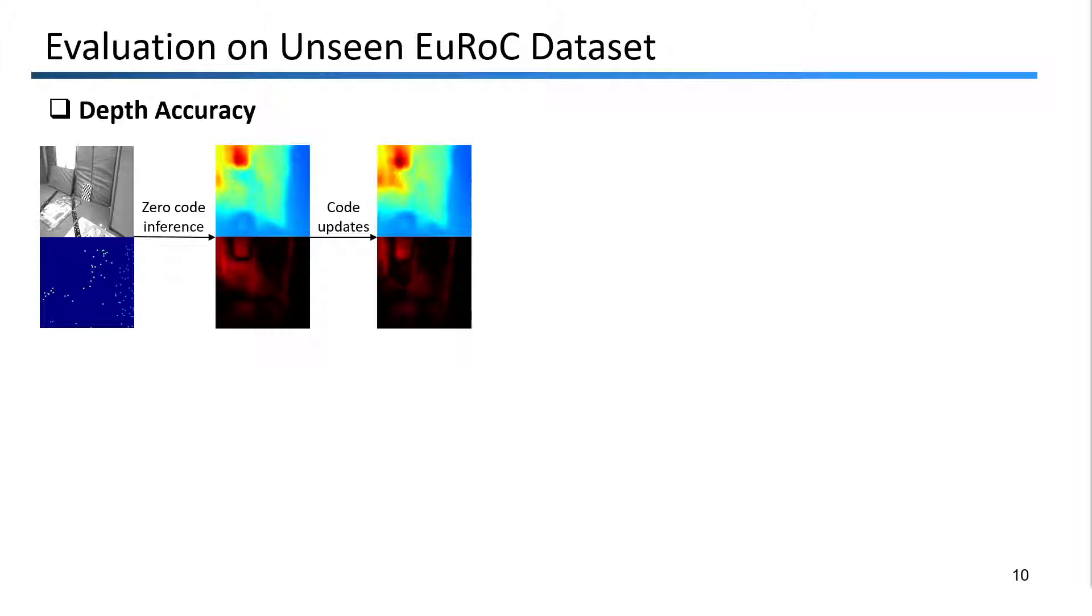We test the full system on the UROC MAV dataset, which was unseen by the network during training. Here you can see a visual of the depth accuracy at each stage. To start we only have sparse VIO depths, which along with the image and the zero code, are fed into the network to get an initial depth map. This along with the visualization of the depth error are shown in the center. On the right is the depth and error after the code is updated by the sparse measurements we previously discussed. As you can see, the error is greatly reduced after the updates. However, you may be wondering how this looks in the average case.